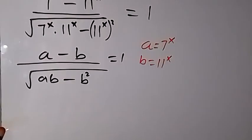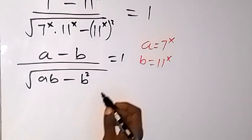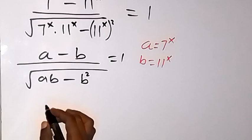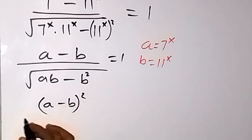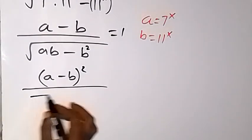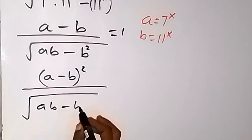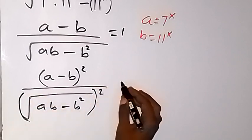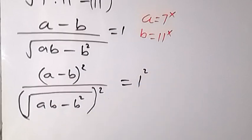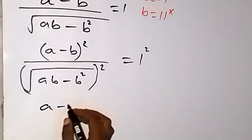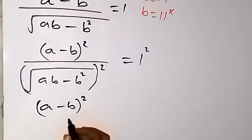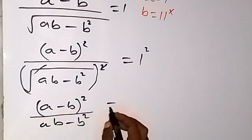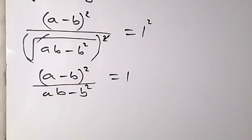From here, let's try to square both sides. The square on this side means we square everything, and we can write it as a minus b squared, all squared, then divided by root of ab minus b squared, then also all squared. When we square this, the left hand side is squared and the right hand side is 1 squared. The square will cancel the square root and we are left with ab minus b squared, which equals 1.